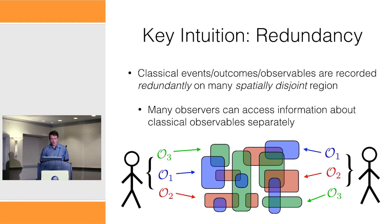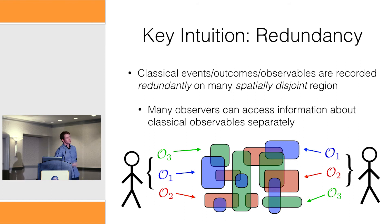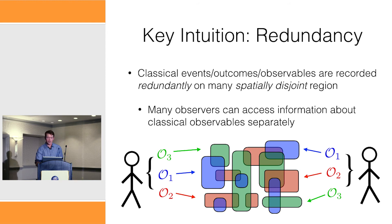This is the idea that many observers can walk around and access information about classical observables separately in spatially disjoint regions — multiple different observables, each with their records located at different points in space.